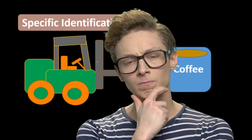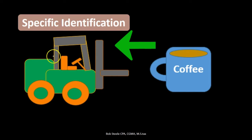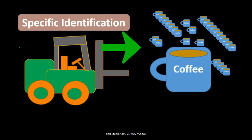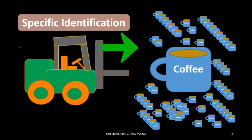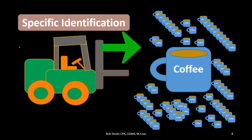You might think we should always use specific identification — it makes perfect sense. It does for large items where tracking is worth our time. However, if we sell something like coffee mugs and assign a specific number to each mug to know exactly what it cost, that would not be worth our time. For something small and uniform, such as a coffee mug, we would use a cost flow assumption such as first in first out, last in first out, or the average method.